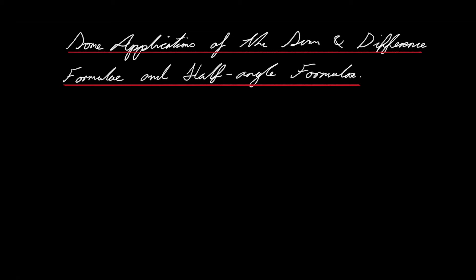Hello everyone. Welcome to another video in my mathematics essential series. I did say in previous videos that some particular video would be the last in the trigonometric identity section of this series, but I realized I hadn't shown a nice application of the sum and difference formulae and the half angle formulae. So I will dedicate a video to that. The application I'm going to discuss is to do with the fact that sometimes in trigonometry you may be working with angles that are not special angles, but you can still find exact trigonometric ratios for those angles by relating them to the special angles.